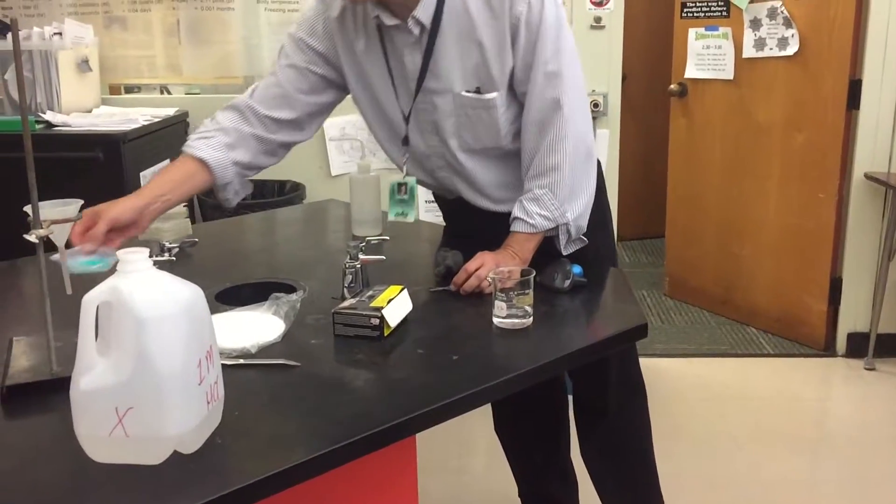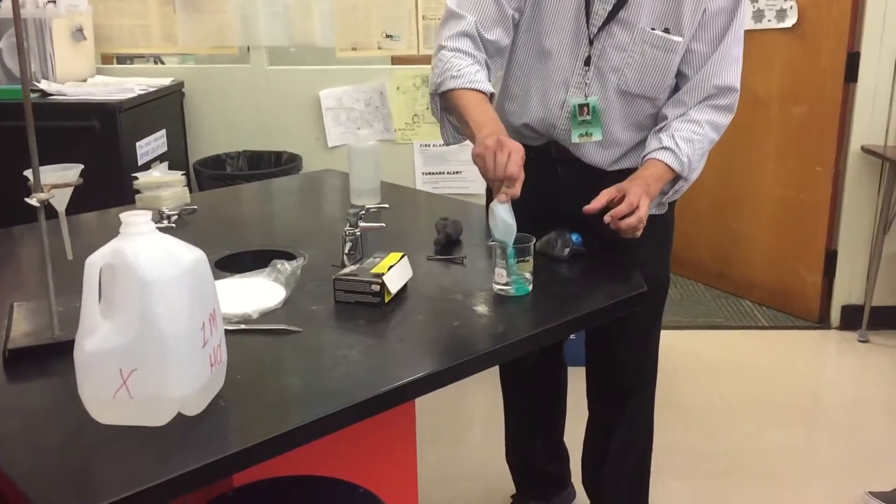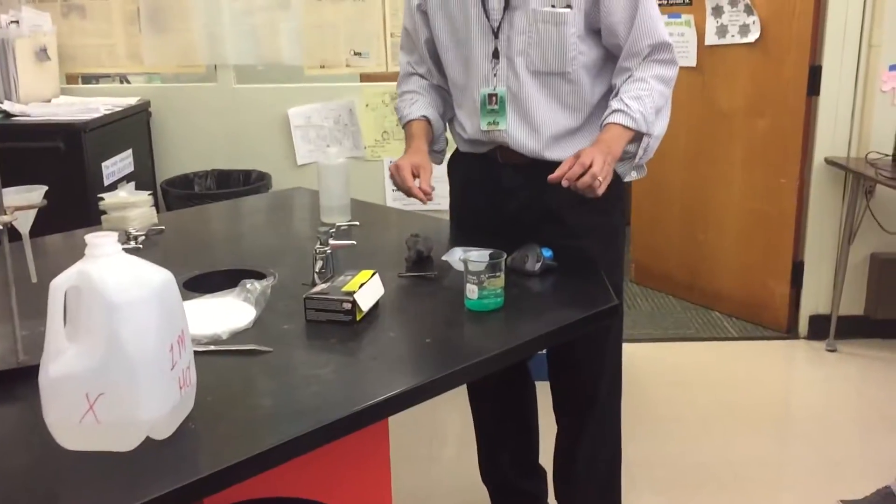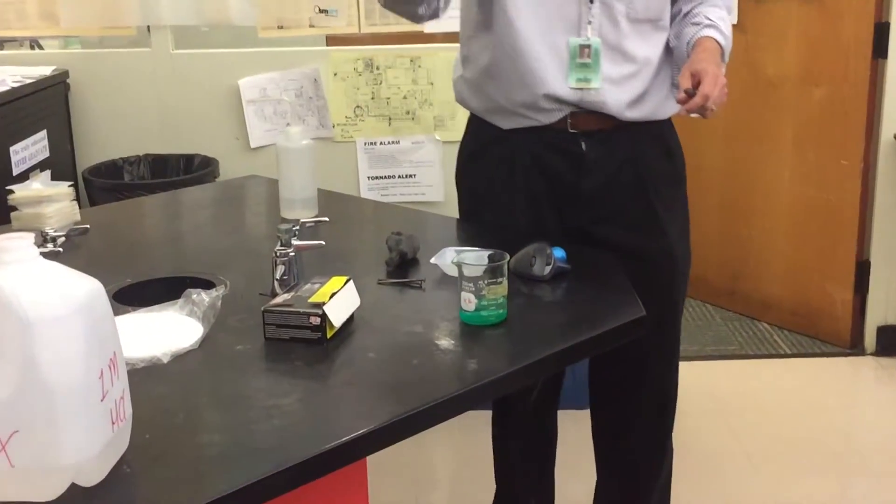We'll take our about 8.5 grams of copper chloride, put it in there, and we want to dissolve it, and there's a couple ways we can do that.